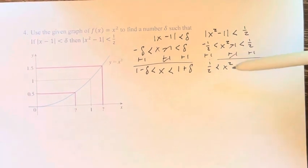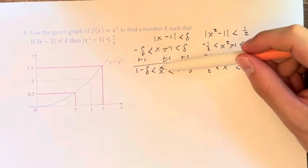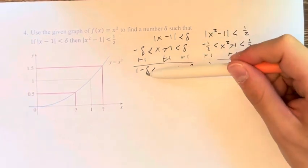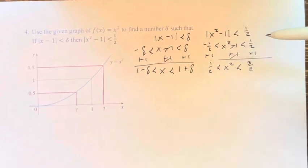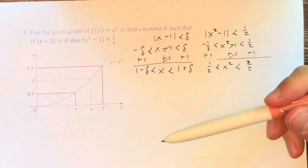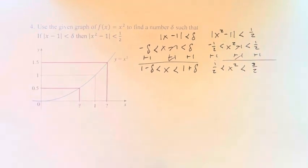Therefore, we're saying that we're looking at values of x that output values of x squared between 1 half and 3 halves. We need to find a delta for which, no matter how far you go left or right, as long as it's less than delta, you're going to be within this range.